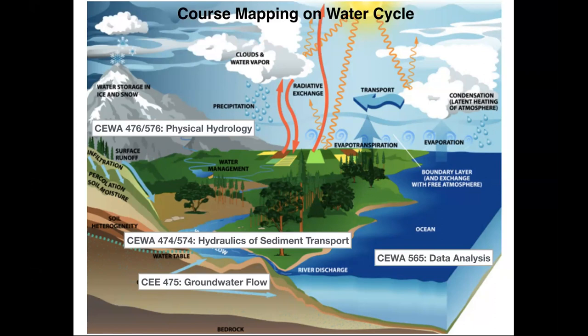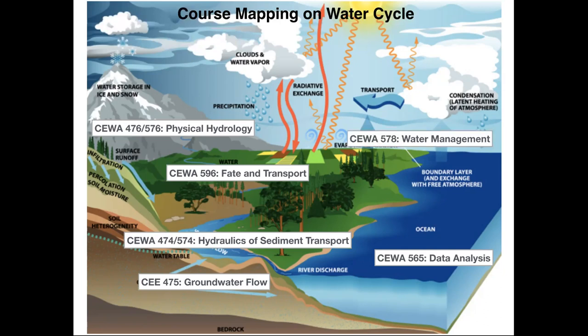We have hydraulics of sediment transport, which covers what phase sediment is moving in — suspended in the water column or as bed load — how it drives bed form evolution, and how it causes local erosion. We have fate and transport, where we look at solute concentration, contaminants in the water column, how they degrade, and how physics, chemistry, and biology control various materials like arsenic. We also have water management courses covering design of stormwater and wastewater systems, and coastal engineering covering shoreline erosion, beach protection, wave-structure interaction, and marine renewable energy.